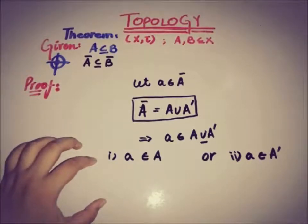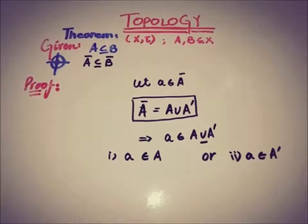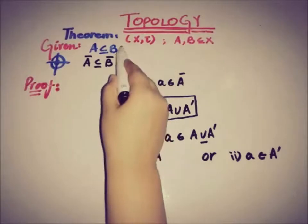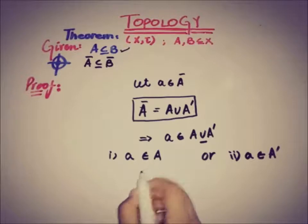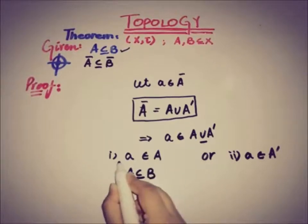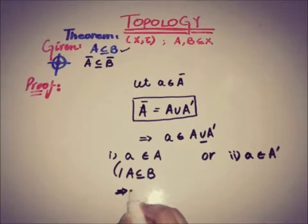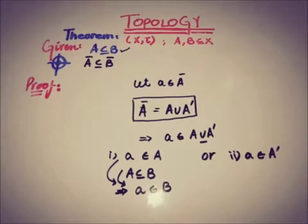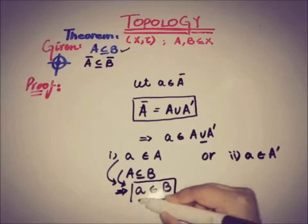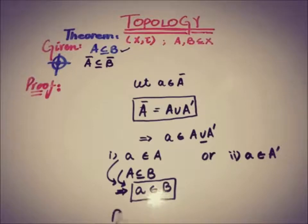In the first case, if a ∈ A and it is given that A ⊆ B, then both of these together imply that a ∈ B. By the definition of closure, any set is a subset of its closure, so B ⊆ B̄. Therefore, since a ∈ B, we conclude a ∈ B̄.